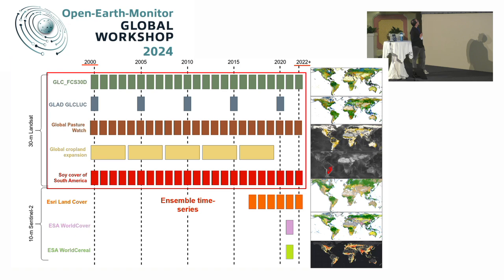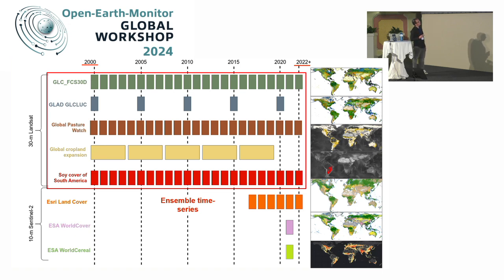Peter from GLAD produced the global crop expansion dataset at 30-meter resolution, also available in the OMC app. There is also soil cover data for South America — a small chunk relative to the whole world but a very valuable dataset because it's specific to crop type, and it's being updated. All this data is time-series based on Landsat with different time frequencies.